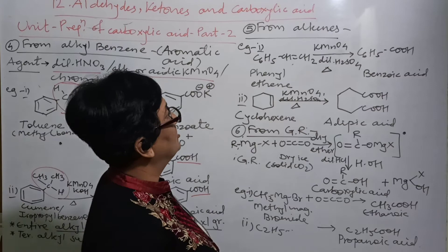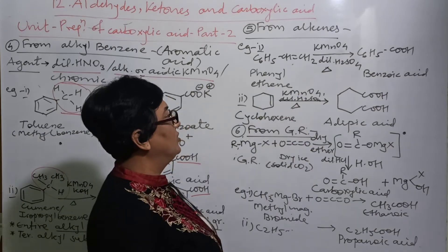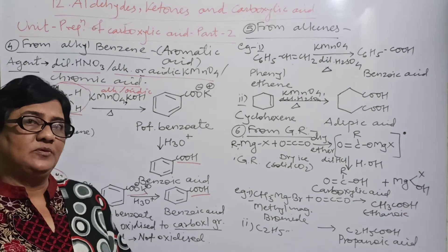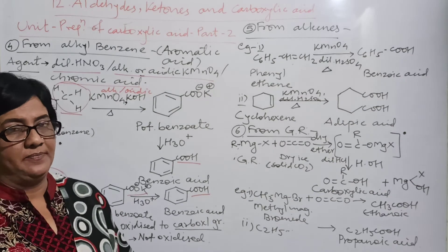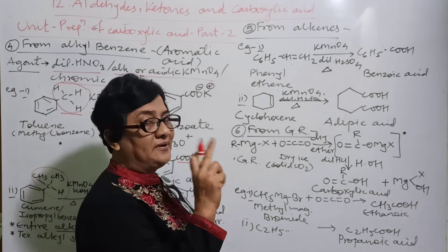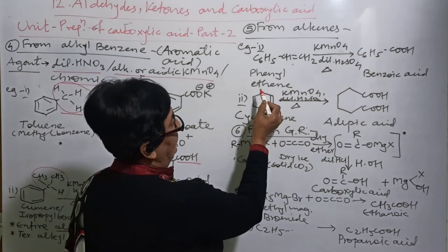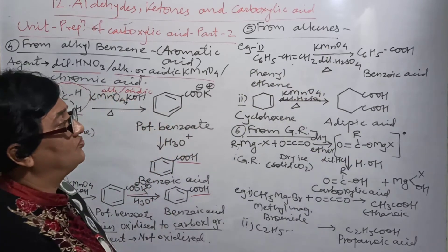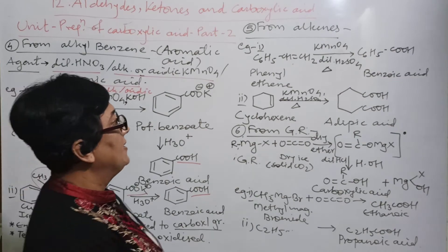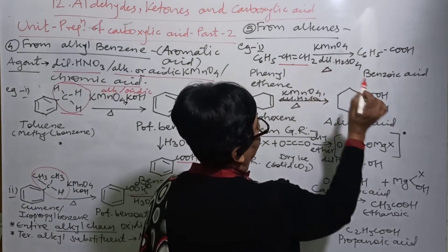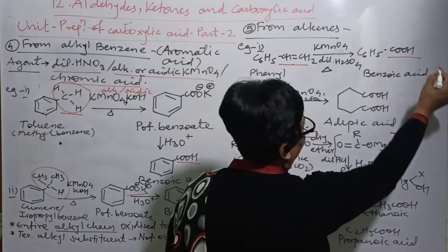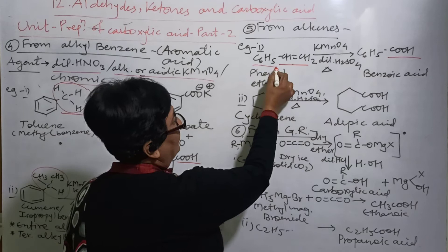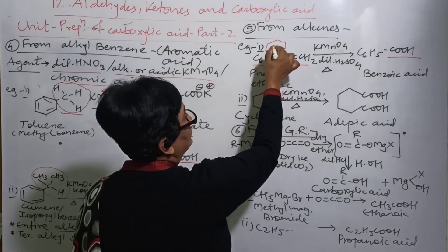Now the fifth method of preparation is from alkynes. Here particularly aromatic alkyne is given, but still aliphatic can also be prepared, which is not preferred but can be prepared. Here phenylethyne is given and the oxidizing agent KMnO4, dilute H2SO4, heating condition is necessary. Here this double bond portion gets converted into COOH, which is called benzoic acid. Here C6H5 is shown, you can write this in this form as well.